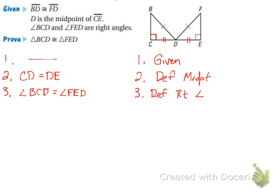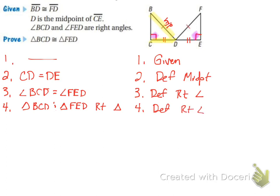At this point we have an angle and two sides, and the angle is not between the sides — it's a right angle. So BD is the hypotenuse and CD is the leg. Whenever using hypotenuse leg, we need to state that triangle BCD and triangle FED are both right triangles, by definition of right angle. Then we can conclude that triangle BCD is congruent to triangle FED by hypotenuse leg.